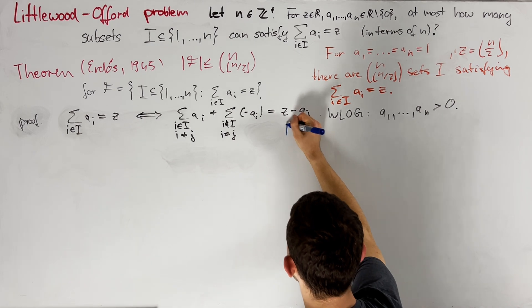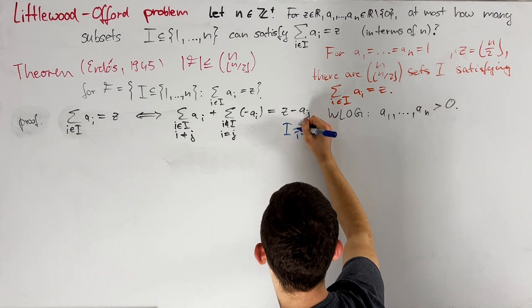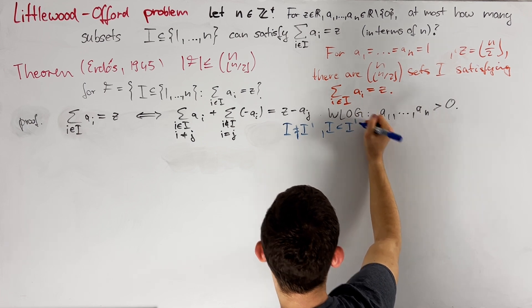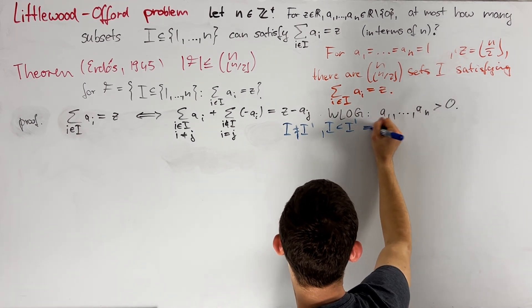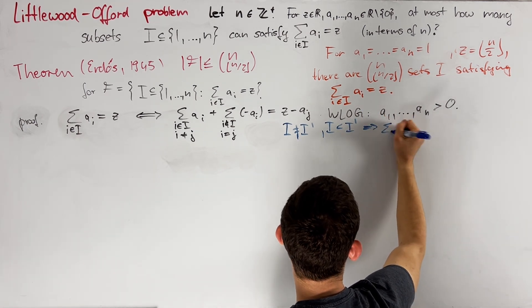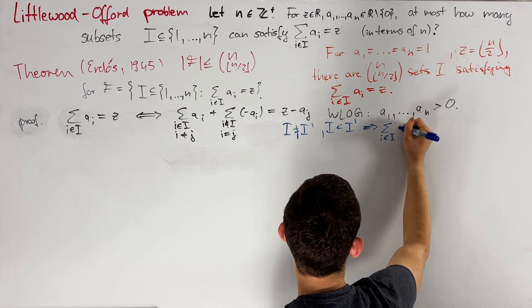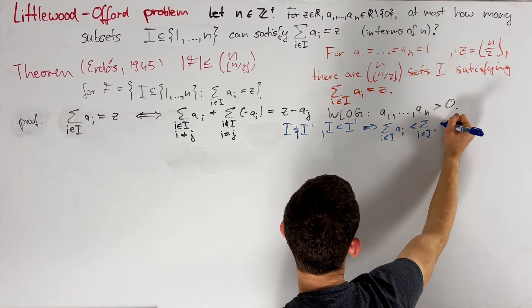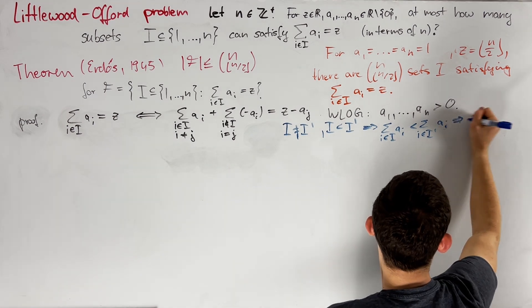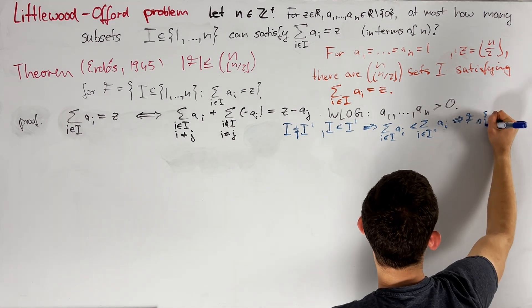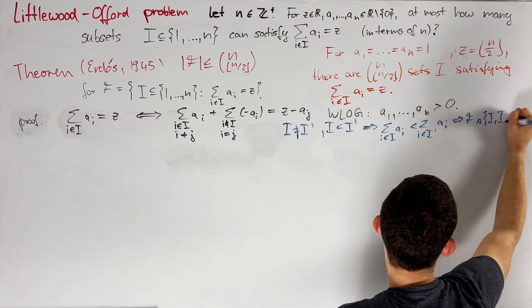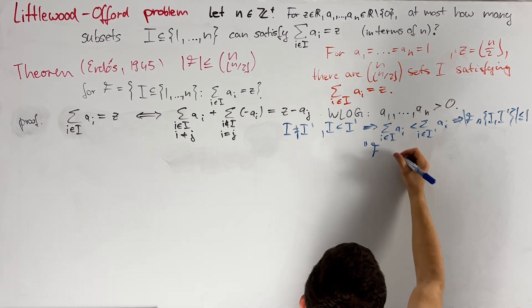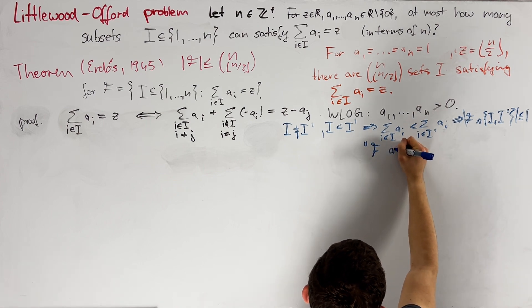Now we have that if we have any sets i and i prime, say they are not equal to each other and i is a strict subset of i prime, then we can conclude that the sum of i in i, ai is strictly smaller than the sum of i in i prime, ai. So F can contain at most one of the two sets i and i prime. Since no two elements of F are subsets of each other, we call F an anti-chain.